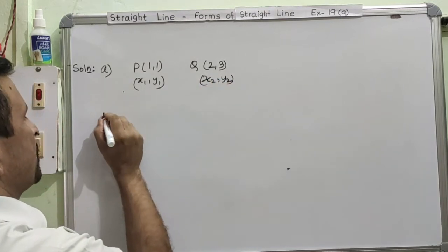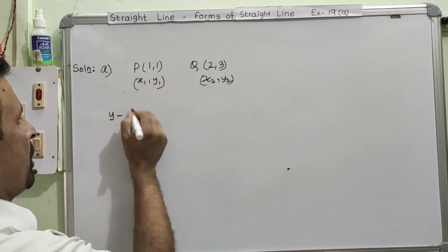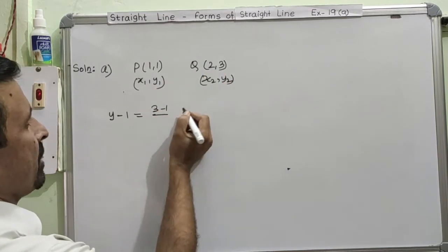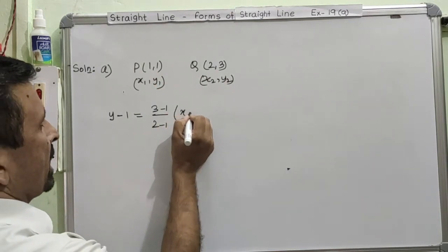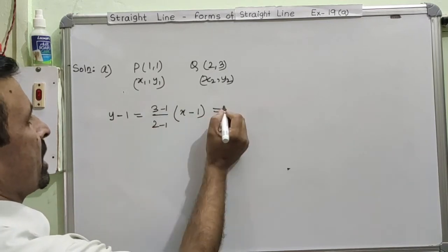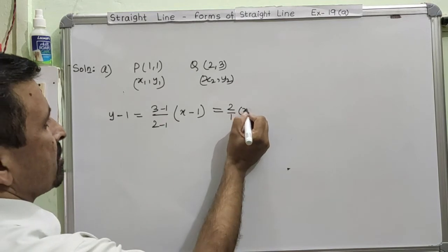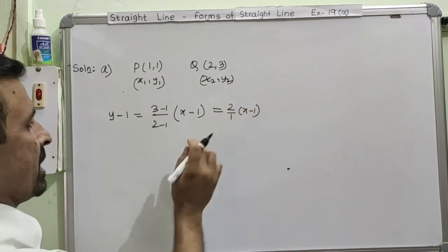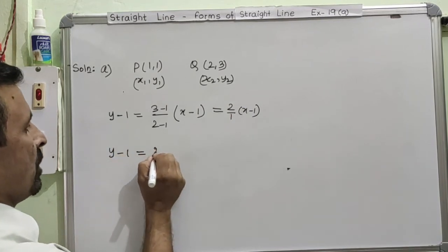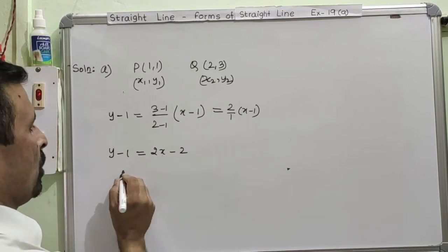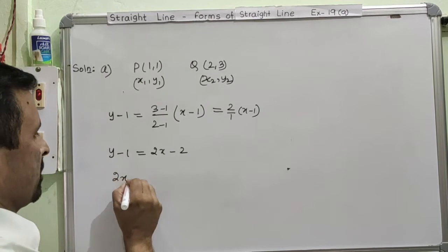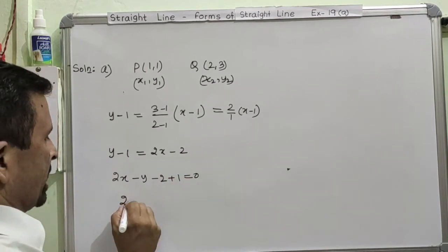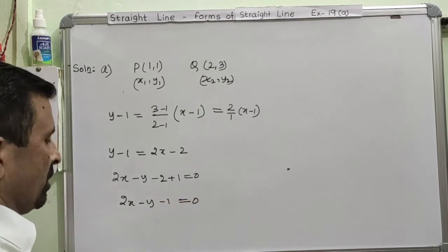The equation is: y - 1 = (3 - 1)/(2 - 1) × (x - 1). Simplifying: 3 - 1 = 2 and 2 - 1 = 1, so y - 1 = 2(x - 1), which gives y - 1 = 2x - 2. Writing all terms on one side: 2x - y - 1 = 0. The equation is now in the standard format with all terms on the left and zero on the right.